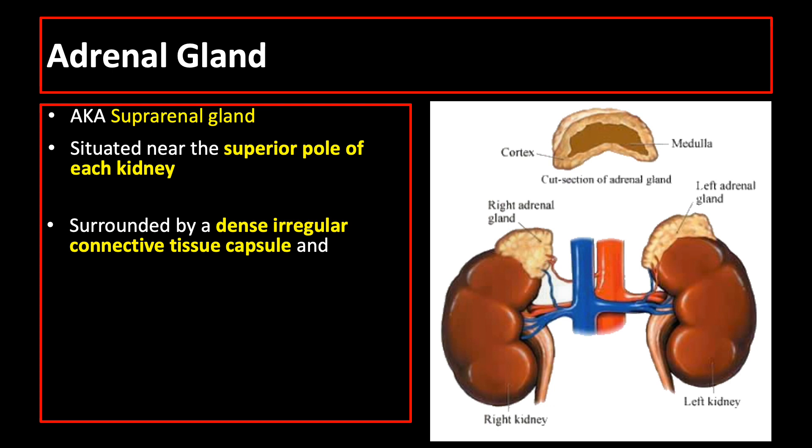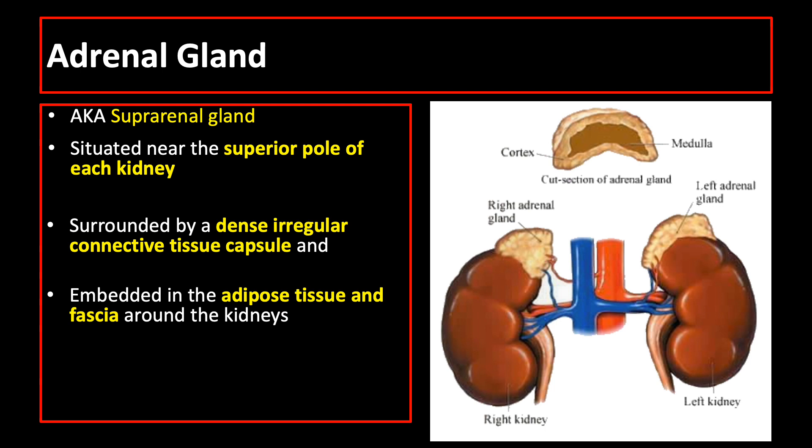They are surrounded by a dense irregular connective tissue capsule and embedded in the adipose tissue around the kidneys. Each gland has two concentric regions: the outer adrenal cortex, which is yellowish in color, and the inner adrenal medulla, which is reddish-brown in color.